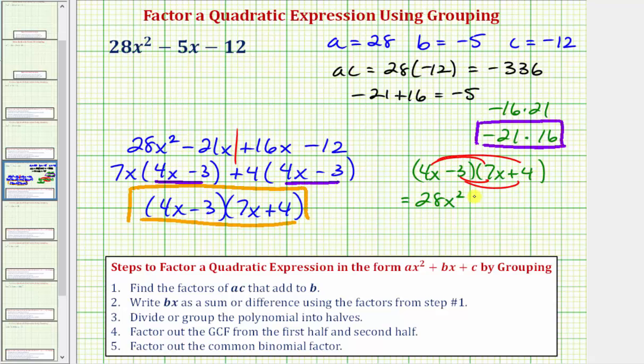So we'd have four x times seven x, that's 28 x squared. Four x times four, that's 16 x, or plus 16 x. And then we have negative three times seven x, that's negative 21 x, or minus 21 x. And then finally, we have negative three times positive four, that's negative 12, or minus 12.